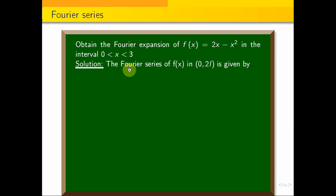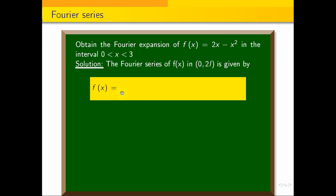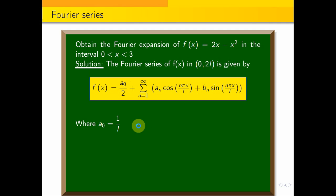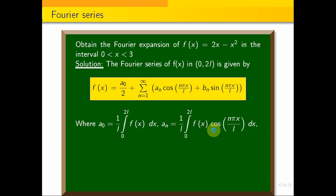The Fourier series of f of x in the interval 0 to 2l is given by: f of x is equal to a naught by 2, plus summation n equal to 1 to infinity, a n cos n pi x by l, plus b n sin n pi x by l. Using this formula, we find a naught, a n, and b n. a naught is equal to 1 by l, integral 0 to 2l, f of x dx. And a n is equal to 1 by l, integral 0 to 2l, f of x into cos n pi x by l dx.